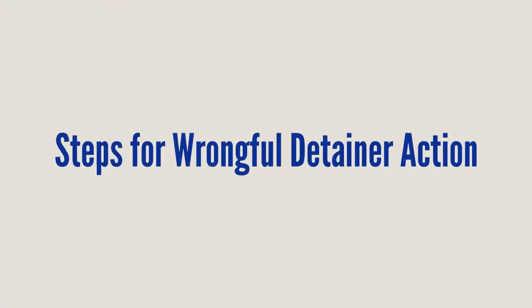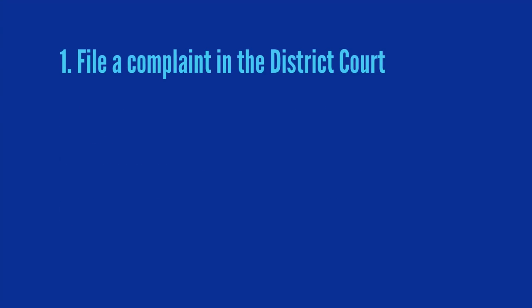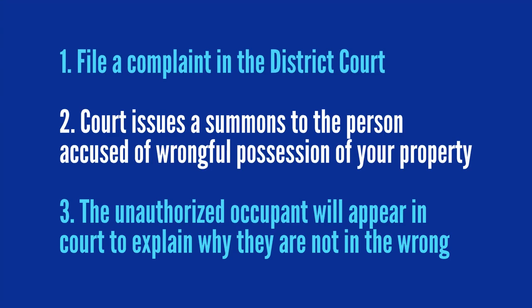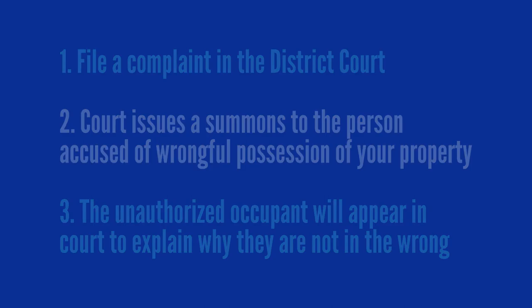Here are the steps for a wrongful detainer action. Number one, file a complaint in the district court. Number two, the court issues a summons to the person accused of wrongful possession of the property. Number three, the unauthorized occupant will appear in court to explain why they are not in the wrong.